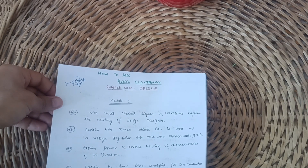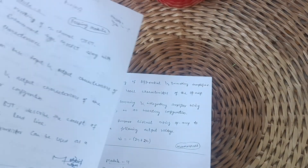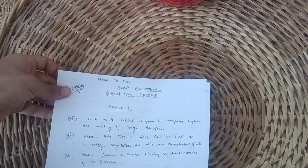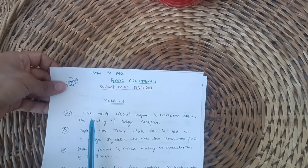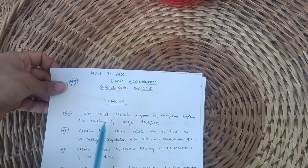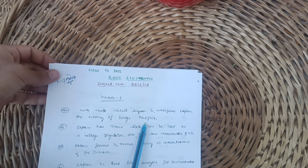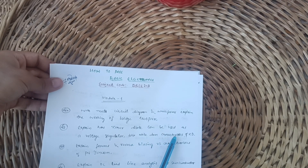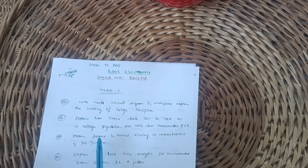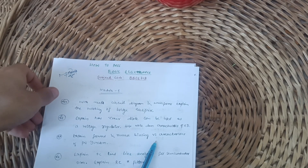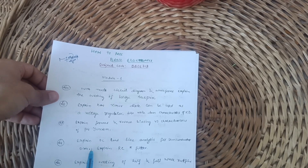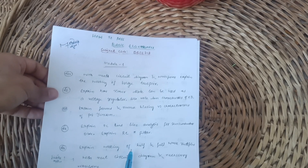There are three passing modules: module 2, module 3, and module 5. First I will discuss the important questions of module 1. The most important question is: with neat circuit diagram and waveforms, explain the working of a bridge rectifier. Also super important: explain how a Zener diode can be used as a voltage regulator, and write down the characteristics of a Zener diode. Next: explain forward and reverse biasing V-I characteristics of a PN junction, explain DC load line analysis for a semiconductor diode, and explain the RC-PI filter.